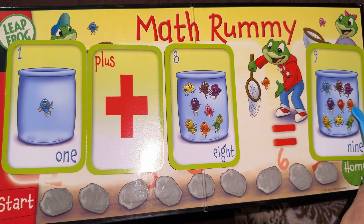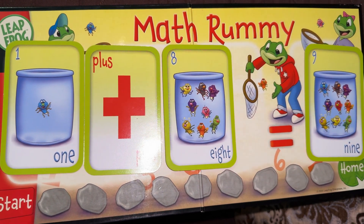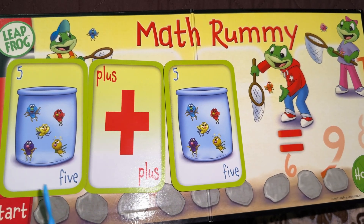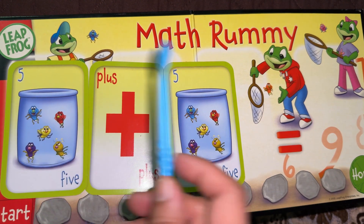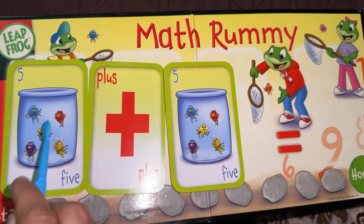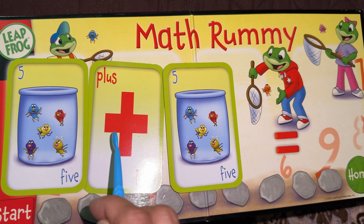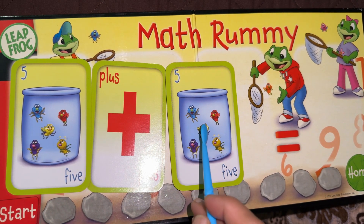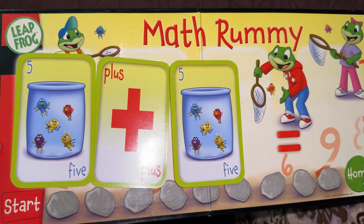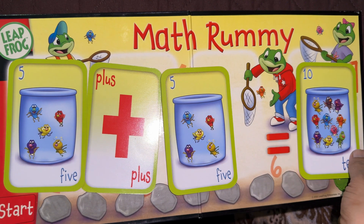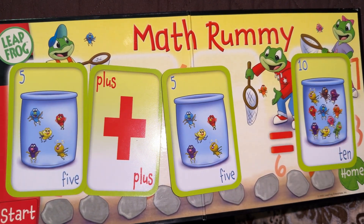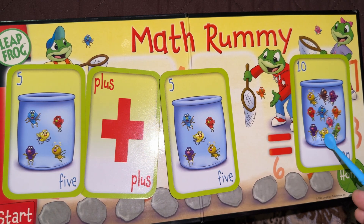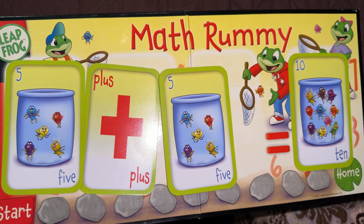There are nine mosquitoes — yes, you're right! One plus eight equals nine. Next question: five plus five. Let's add: one, two, three, four, five, plus six, seven, eight, nine, ten. The answer is ten mosquitoes! Let's count again: one, two, three, four, five, six, seven, eight, nine, ten.